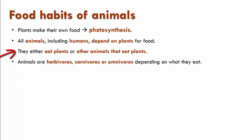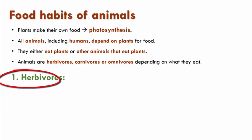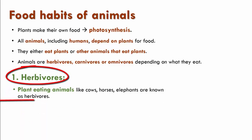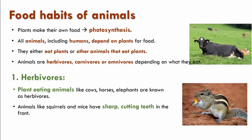Animals either eat plants or other animals that eat plants. Animals are herbivores, carnivores or omnivores depending on what they eat. Plant-eating animals like cows, horses and elephants are known as herbivores.